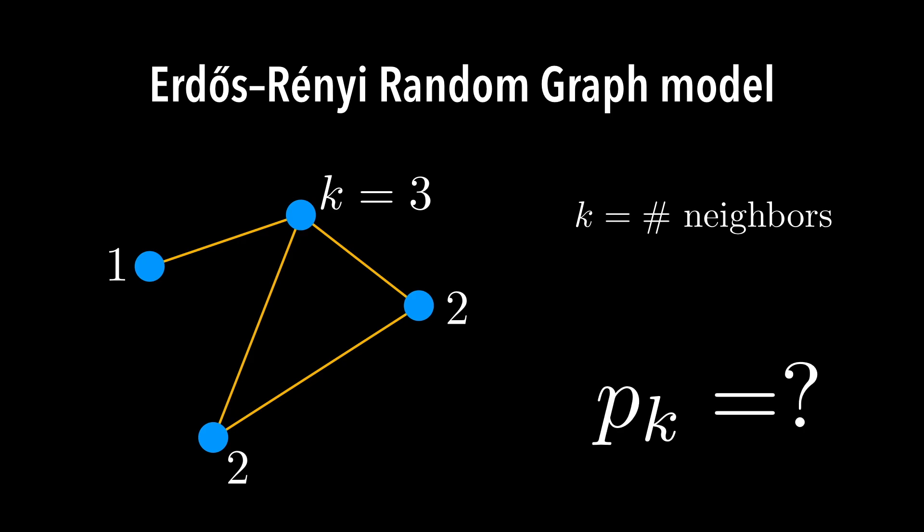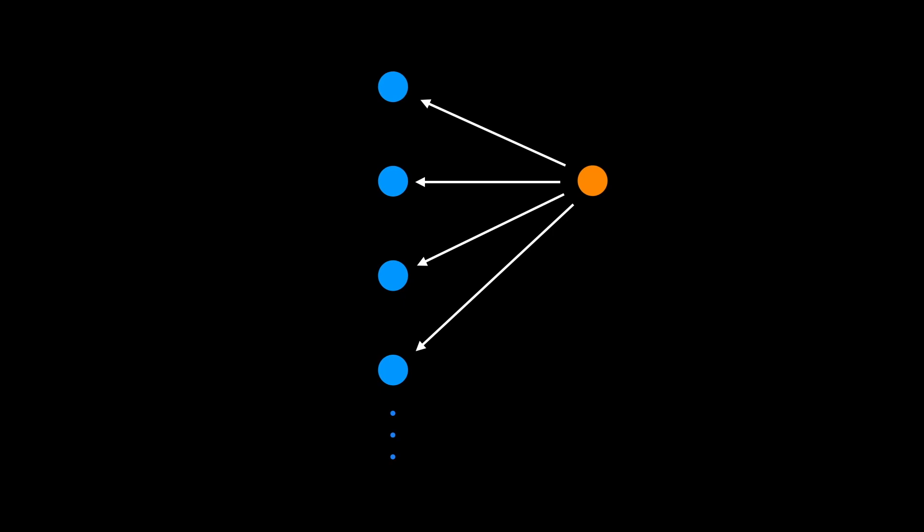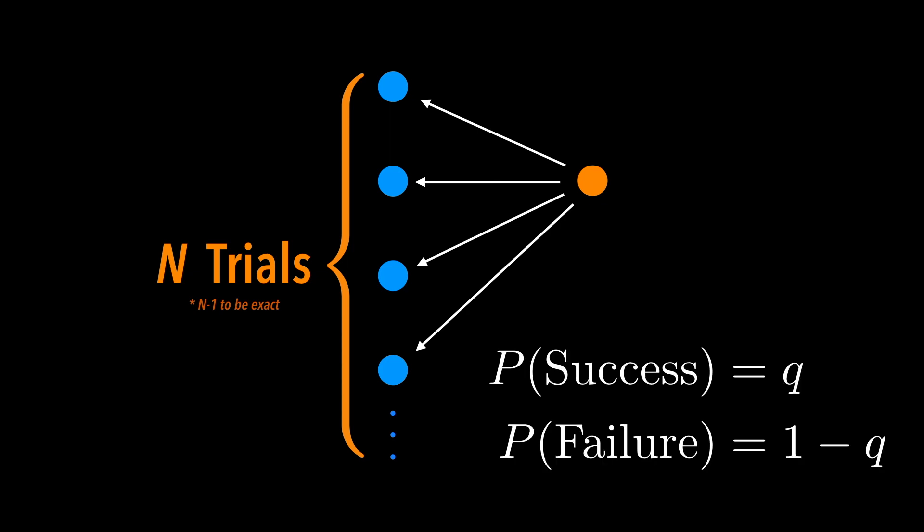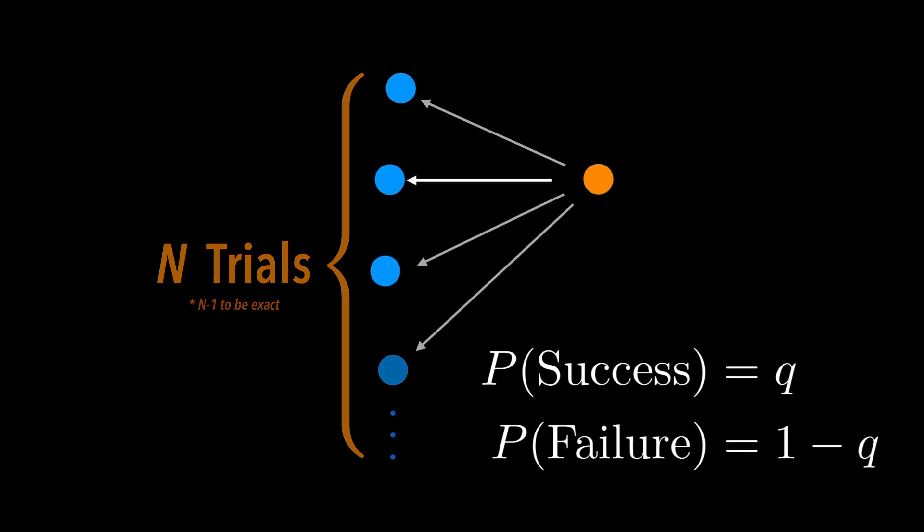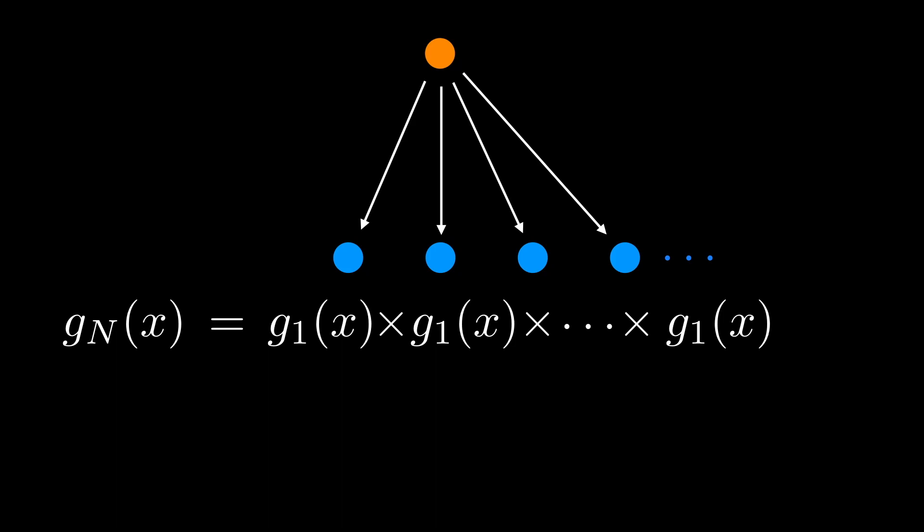Now the question is, what is the probability distribution for the number of neighbors? In other words, what would be the probability that a randomly chosen node has k neighbors? Have you noticed the connection? Okay, let's just focus on this one node. This node will do N Bernoulli trials with every node to decide whether to connect or not. For each trial, it will either succeed or fail. And the probability will be q and 1-q respectively. So if you succeed, you will have one neighbor. If you fail, you will not have any neighbor from this trial.